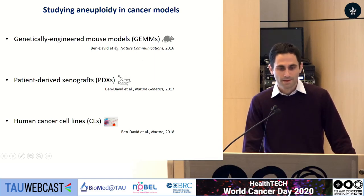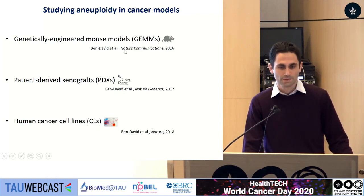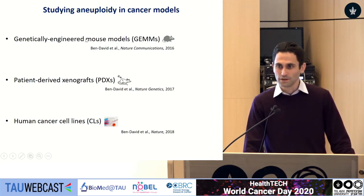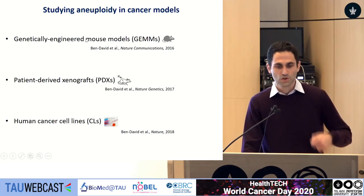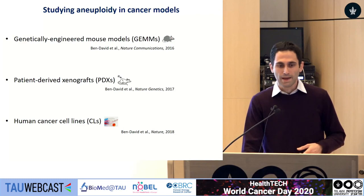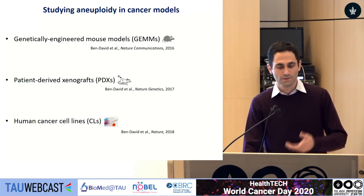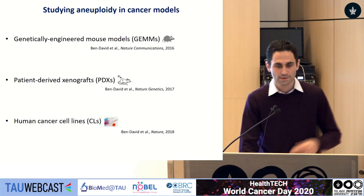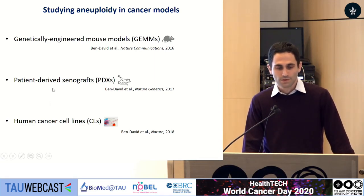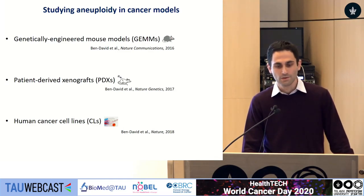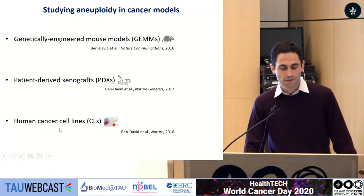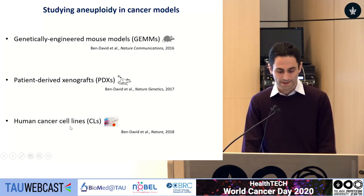I'm going to briefly describe three recent studies we performed in the most common cancer models — all of which we heard about during this session. First, genetically engineered mouse models, which are mice we engineer to silence tumor suppressor genes or overexpress oncogenes to initiate cancer. Then patient-derived xenografts, which are human tumors transplanted directly into immune-deficient mouse recipients. And finally, human cancer cell lines.